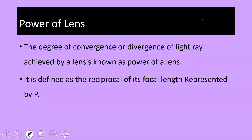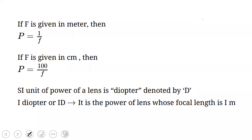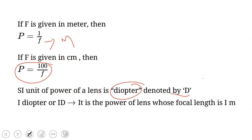Power of a lens is the last topic. It is the degree of convergence or divergence of light rays achieved by a lens, defined as the reciprocal of its focal length. The formula is P = 1/F, where F is in meters. If F is given in centimeters, use P = 100/F. The SI unit of power is the diopter, denoted by capital D. One diopter is the power of a lens whose focal length is 1 meter.